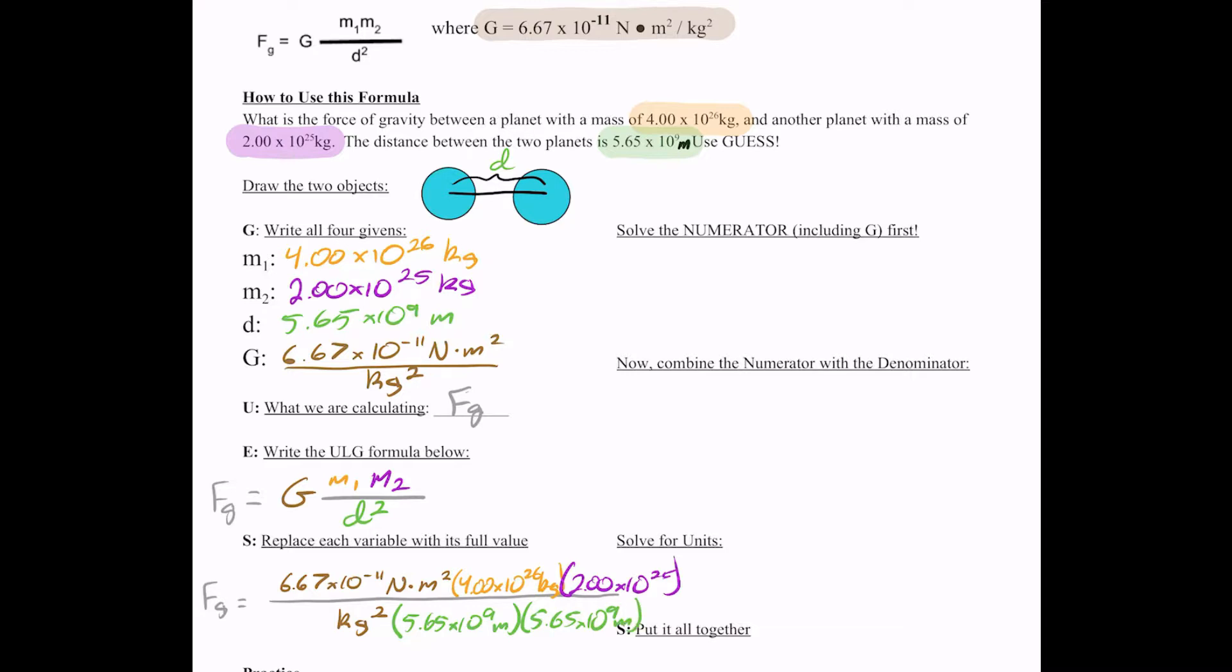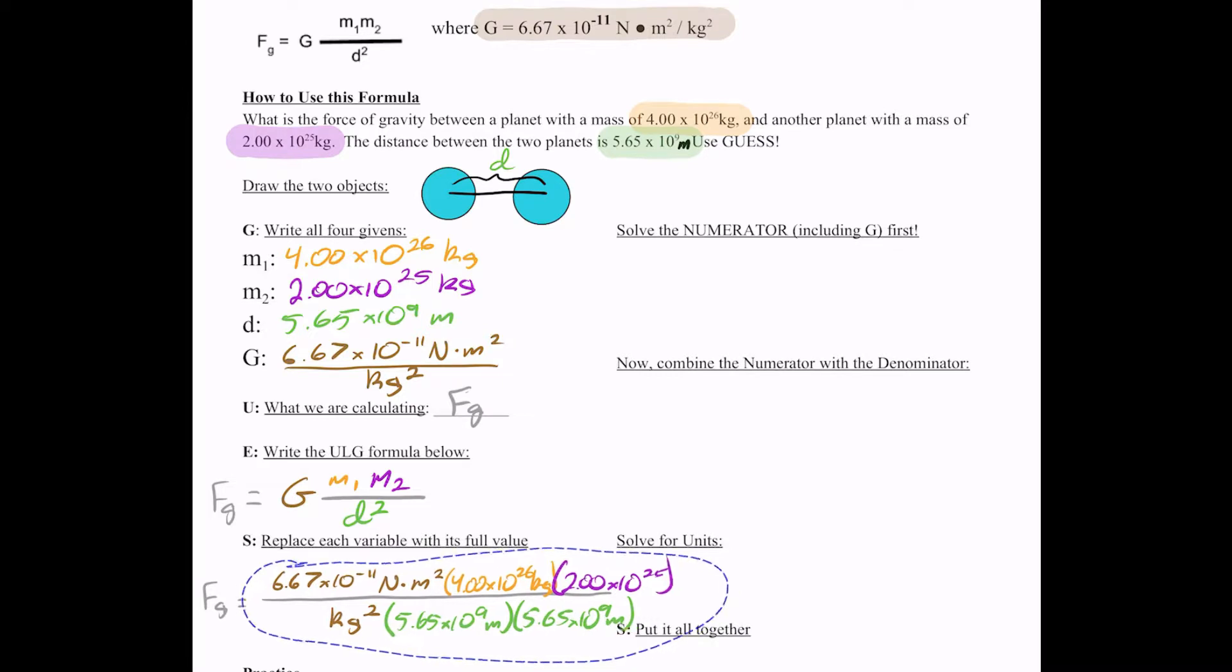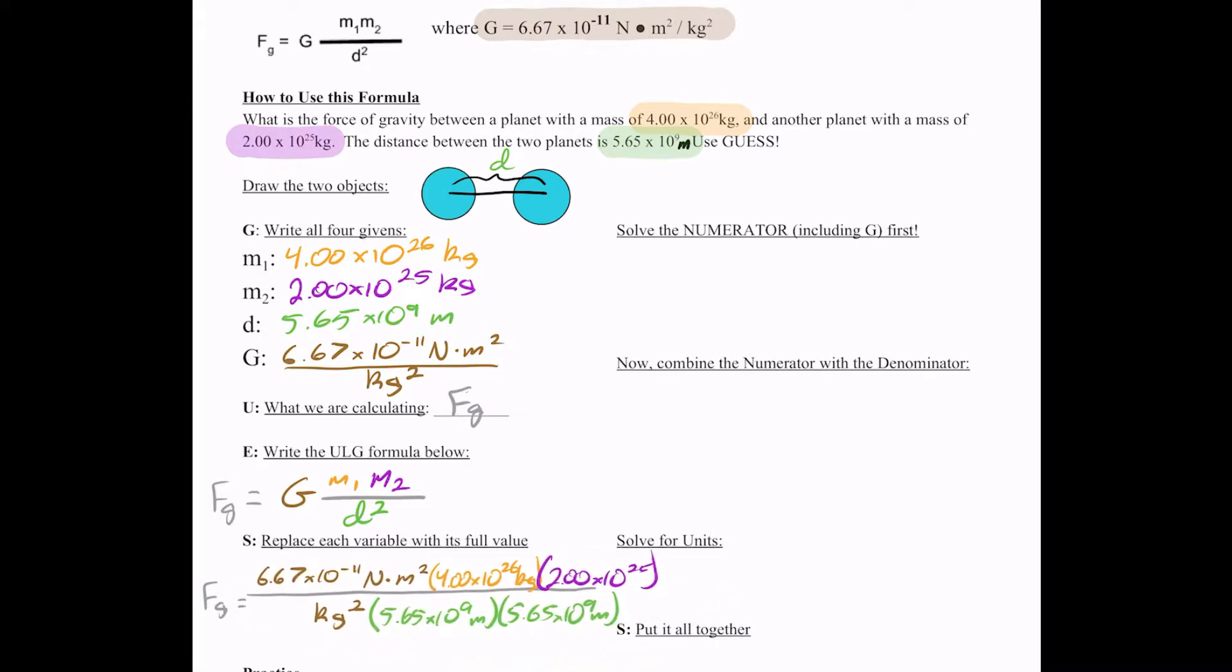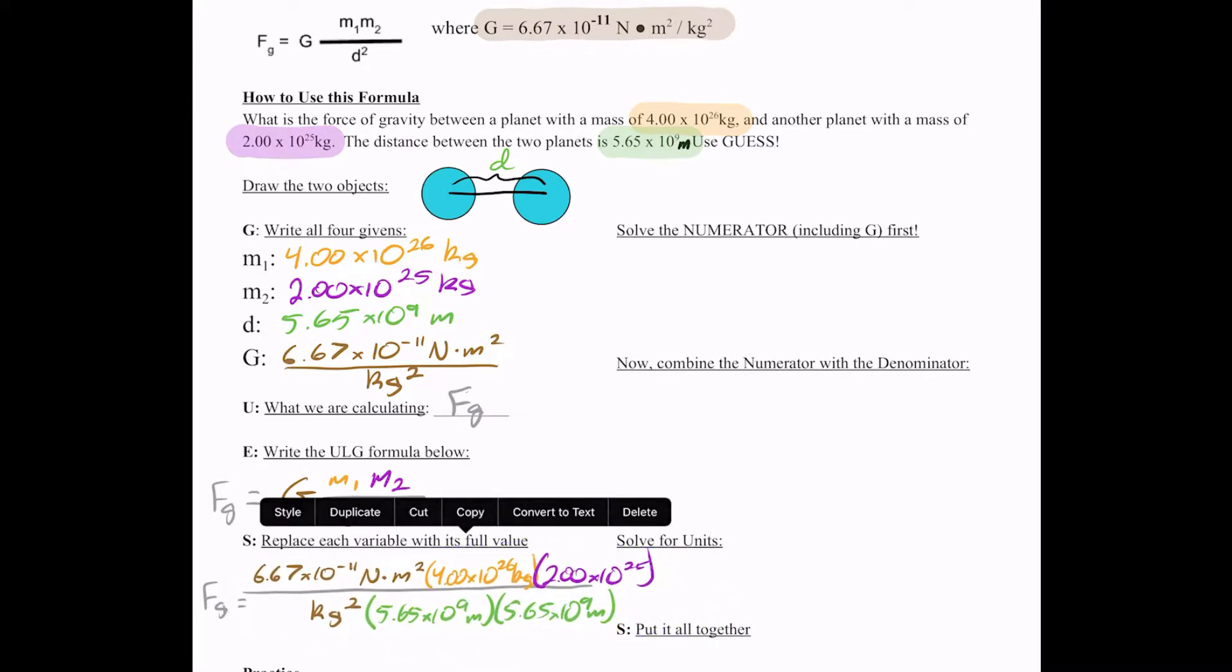It looks very complicated, yes. But I'm telling you that when we break this into doable parts, it is not that bad, and you'll see that. We are going to solve for the numerator first. So we are not going to pay any attention to units. We're not going to pay attention to the denominator. We are just looking at the numerator first.